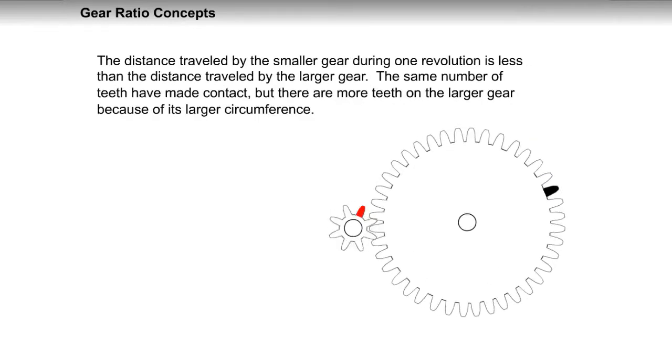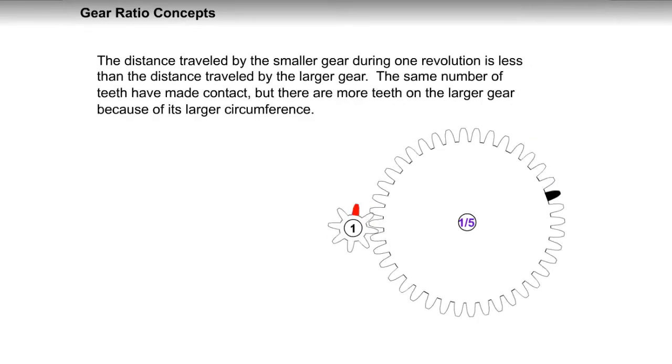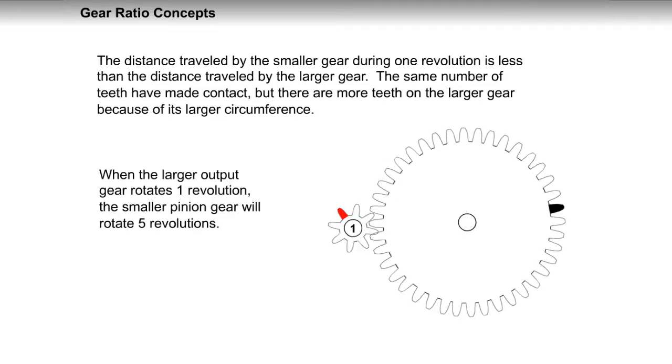The distance traveled by the smaller gear during one revolution is less than the distance traveled by the larger gear. The same number of teeth have made contact, but there are more teeth on the larger gear because of its larger circumference.